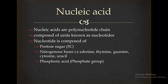There are different nitrogenous bases present: adenine, thymine, guanine, cytosine, and uracil. Thymine is present in DNA, while uracil is present in RNA.